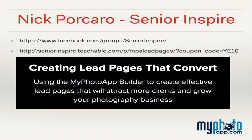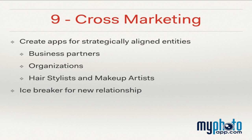Method 9: Cross Marketing. You can be a hero creating apps for vendors or business partners you have a relationship with. Even if you don't have a relationship, an app could be your Trojan horse to establish a new one. When you create these apps, they should have your information as part of them. By cross promoting with others, you have access to each other's sales channels and clientele. Do you have a relationship with a hair stylist or makeup artist? They would love to have an app to promote their business. Developing apps for charitable organizations and events will put a lot of good karma in your life — so be generous and develop apps for others.